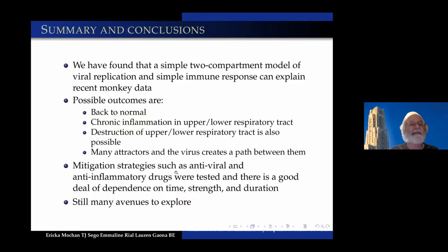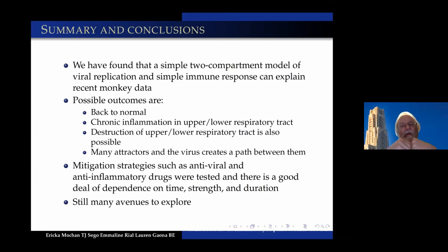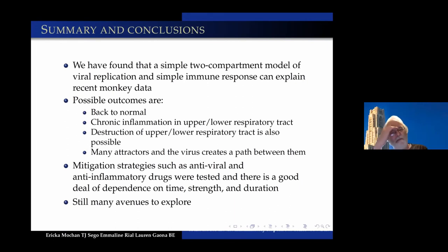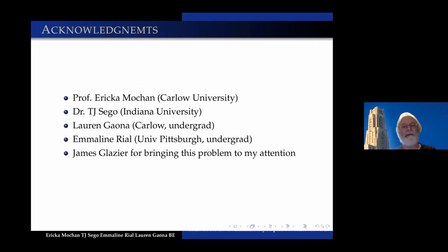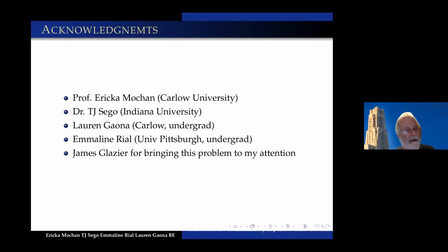Summary and conclusions: we found that a simple two-compartment model of viral replication with a simple immune response can explain recent monkey data. Possible outcomes are return to normal, chronic inflammation, and death — with possible structural differences between upper and lower respiratory tract. There are many attractors and the virus creates a path between them. Mitigation strategies such as antiviral and anti-inflammatory drugs were tested and show strong dependence on time, strength, and duration. Still many avenues to explore. I want to really thank James Glaser for bringing this problem to my attention — he emailed me back in April and got me interested.